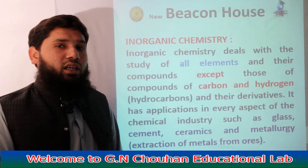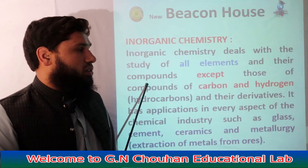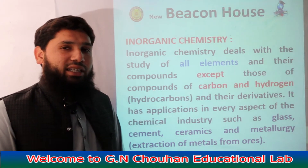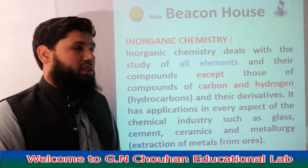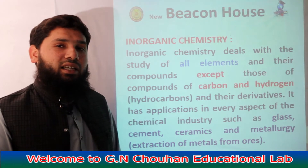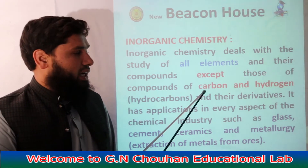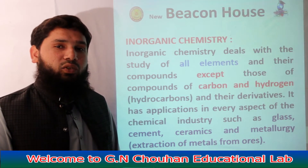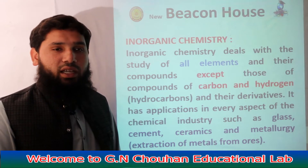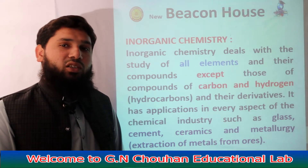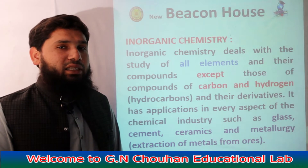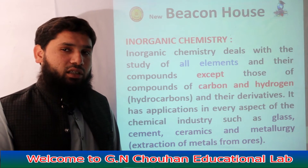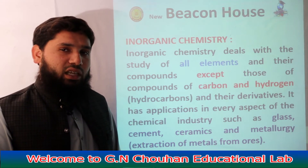Inorganic chemistry تمام elements اور ان کے compounds کی study کرتی ہے، سوائے carbon اور hydrogen کے۔ Total periodic table میں 118 elements ہوتے ہیں، ان میں سے carbon اور hydrogen کو الگ رکھیں تو باقی بچتے ہیں 116 elements۔ ان elements کی study اور ان سے بننے والے compounds کی study کہلاتی ہے inorganic chemistry۔ یہ chemistry کی ایک بہت vast branch ہے۔